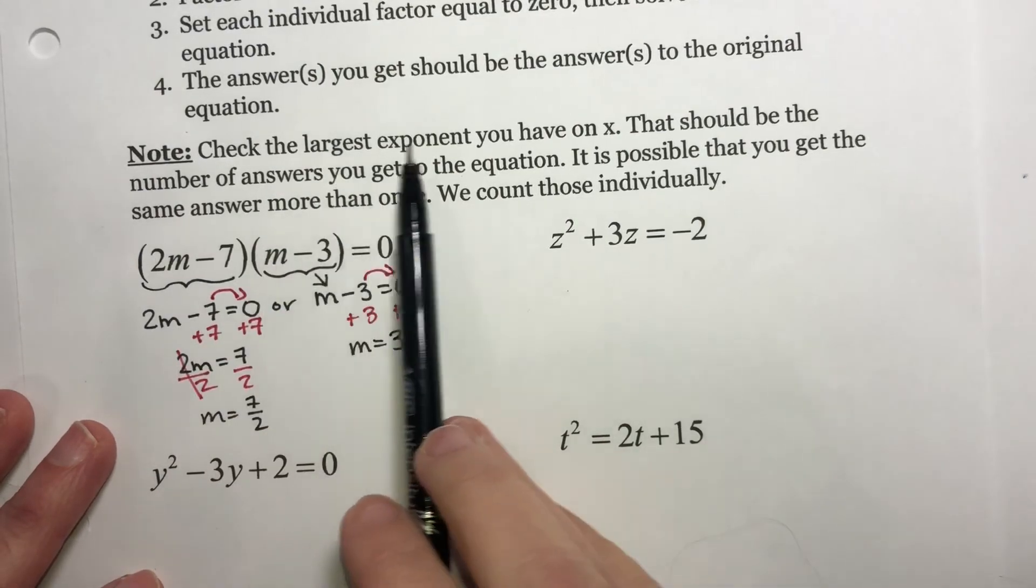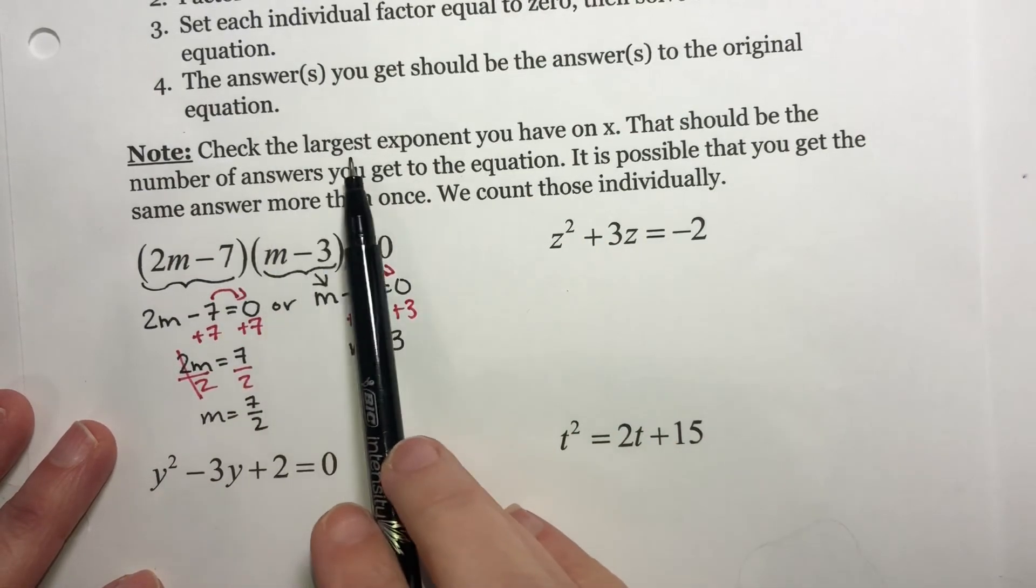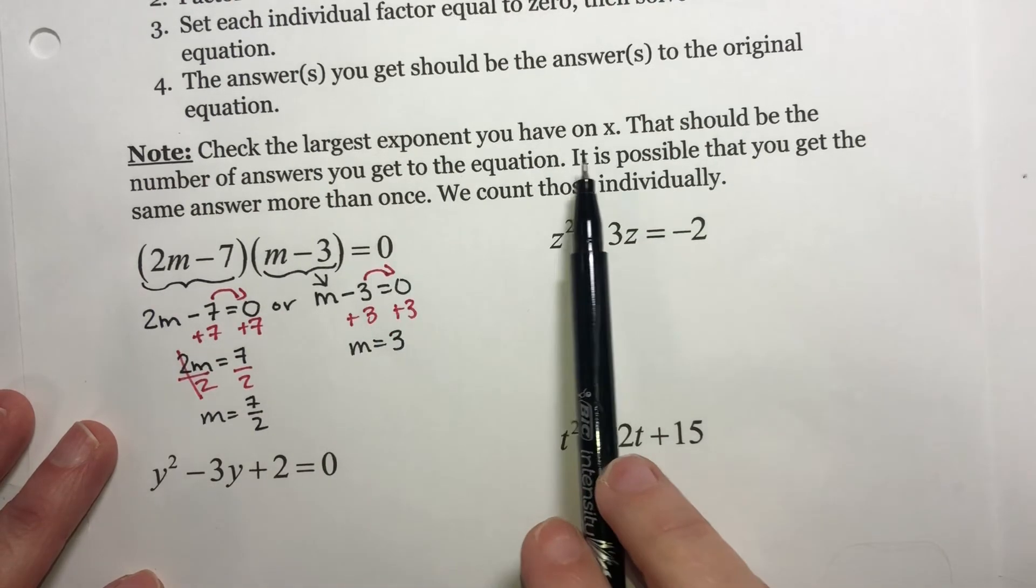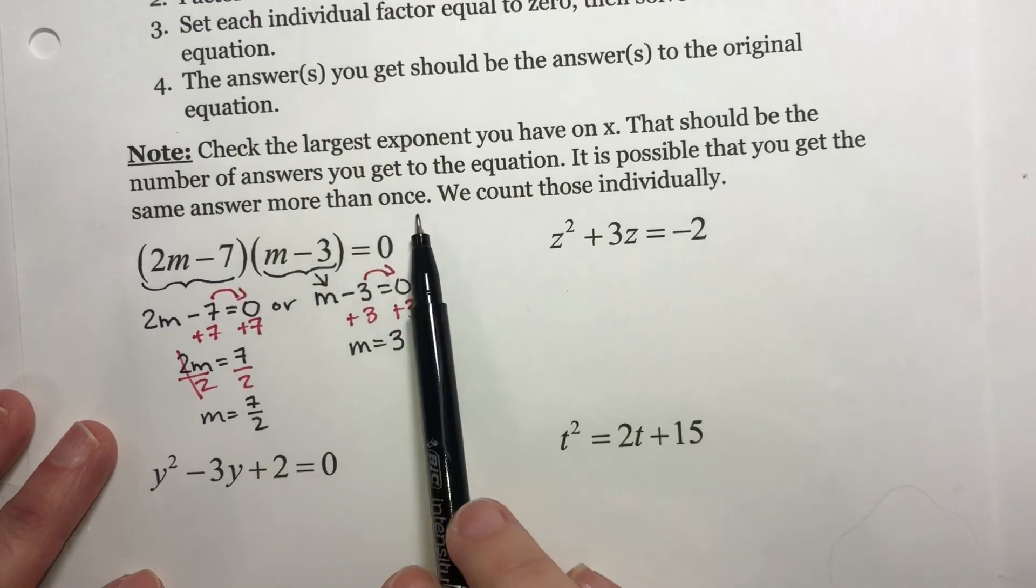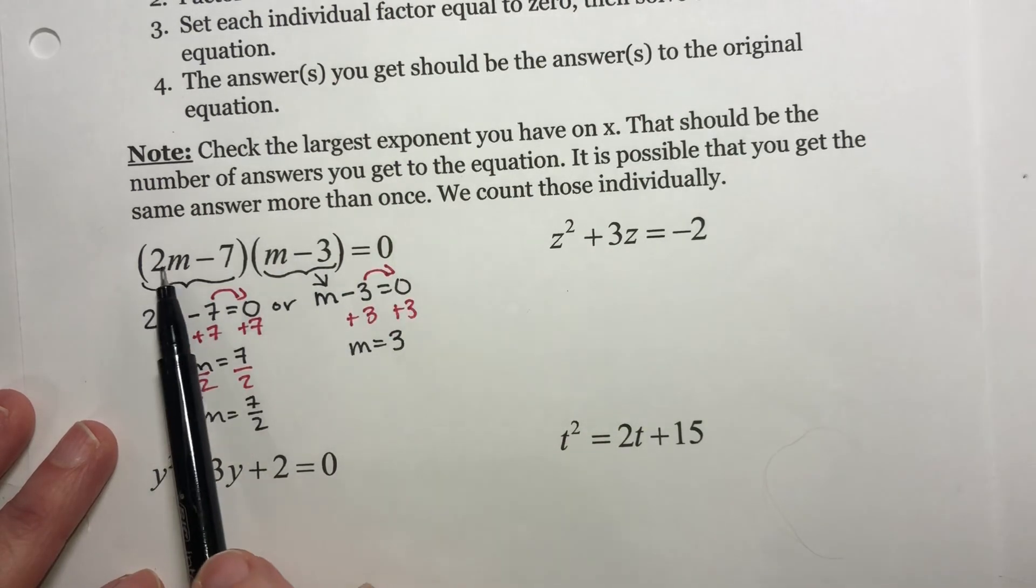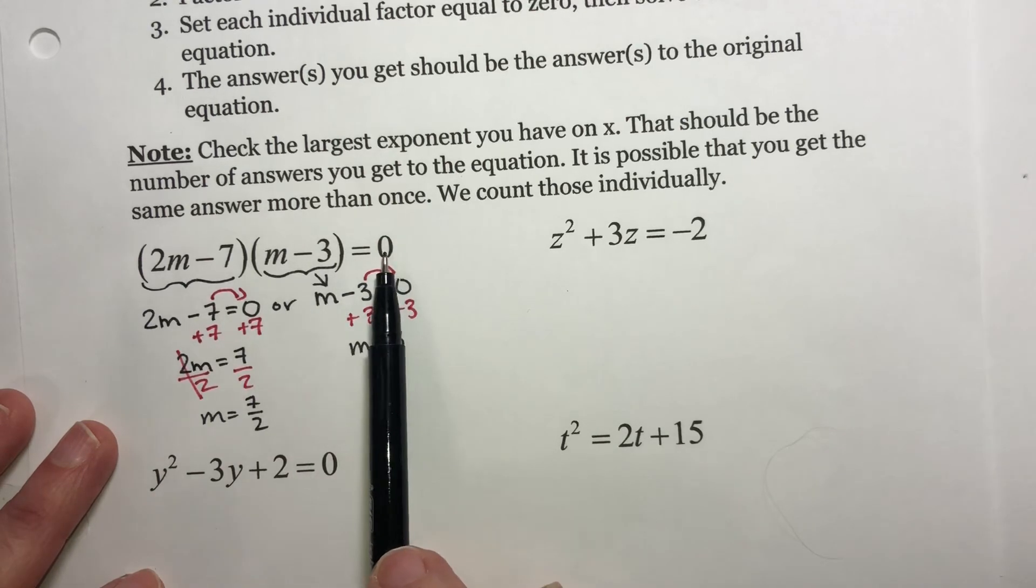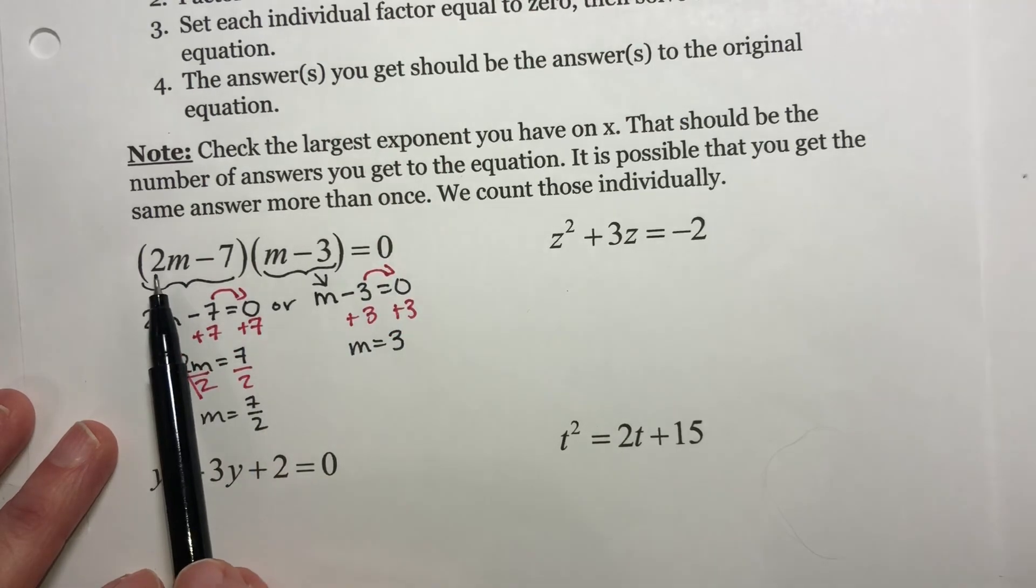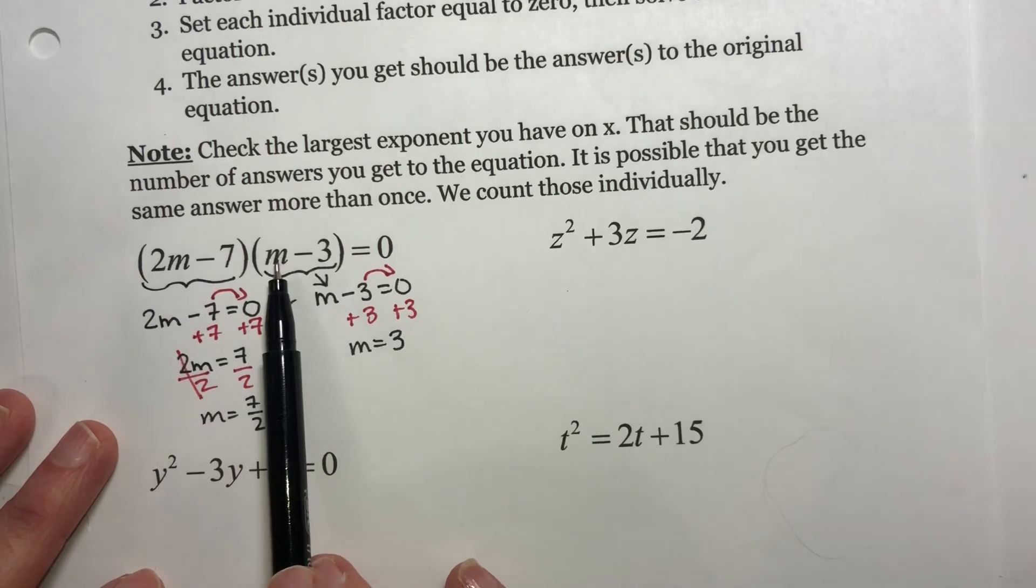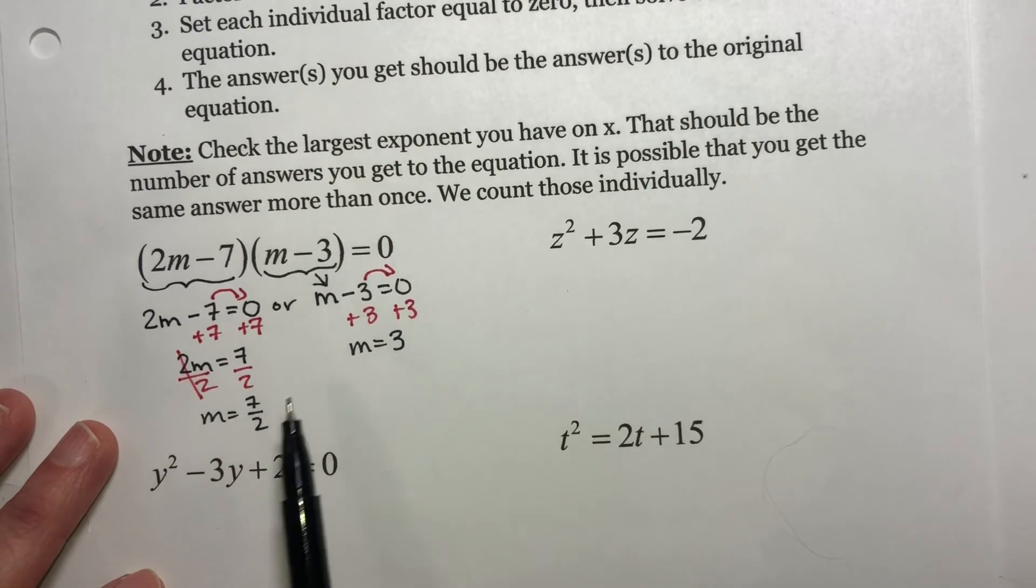Check the largest exponent that you have on x. That should be the number of answers you get to the equation. It is possible that you get the same answer more than once, and we count those individually. When I say the largest exponent, that means if this were multiplied out. If you think about multiplying this doing the distribution, you're going to have m times m, which is going to give you m². So that tells me I should get two answers.